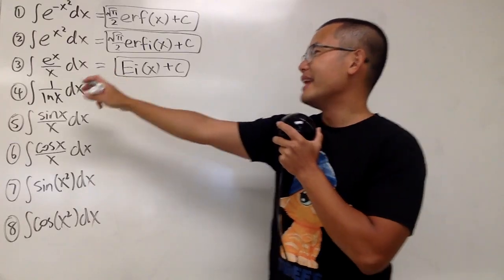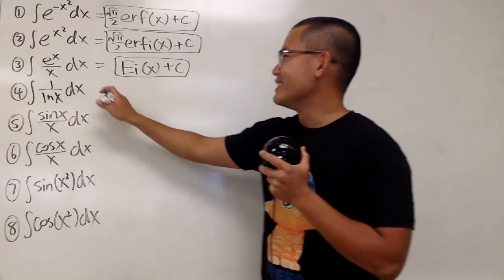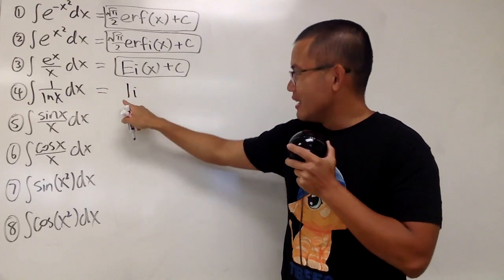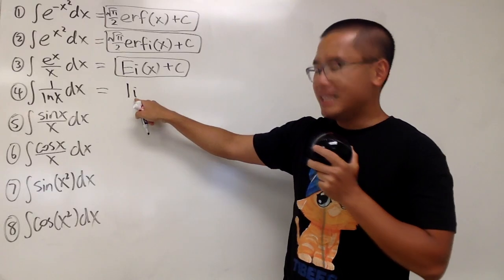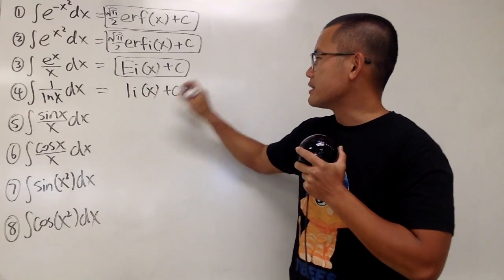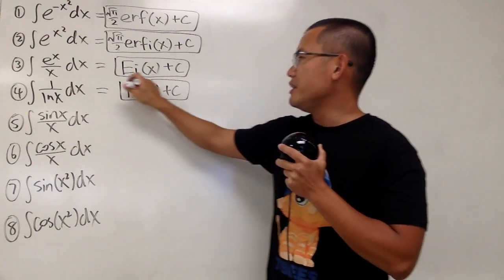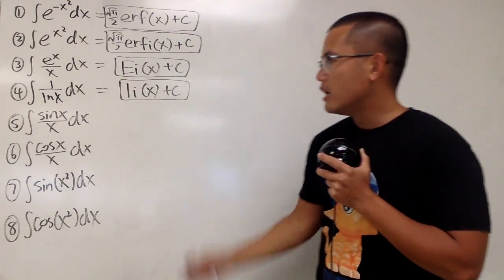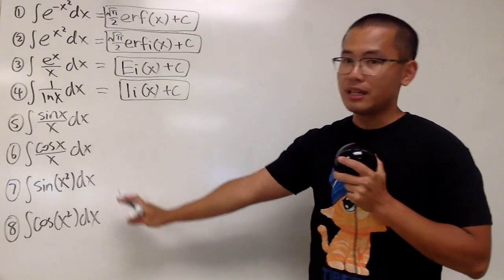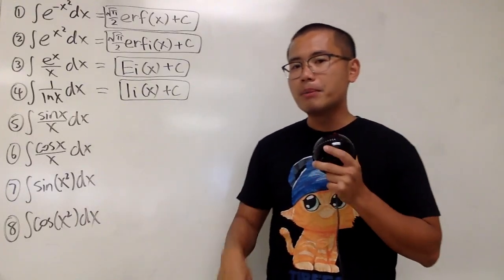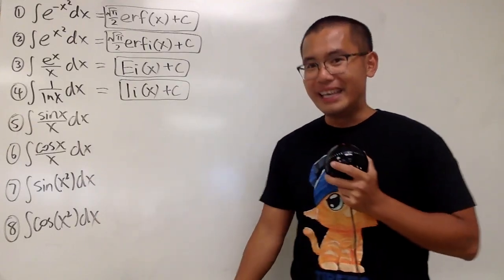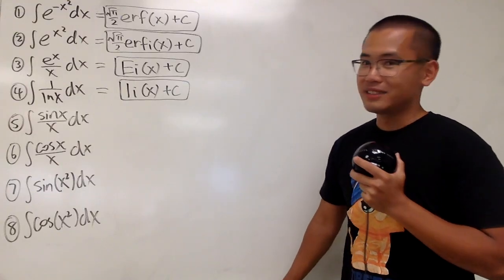Number 4: the integral of 1 over natural log of x. This is just li of x, namely the logarithmic integral function, and that's the name for it. The input is x plus C. We don't need any constant multiple. I believe you use these a lot in physics. You guys can also leave a comment down below — let me know where you have used these kinds of integrals in your classes, your work, or your studies.